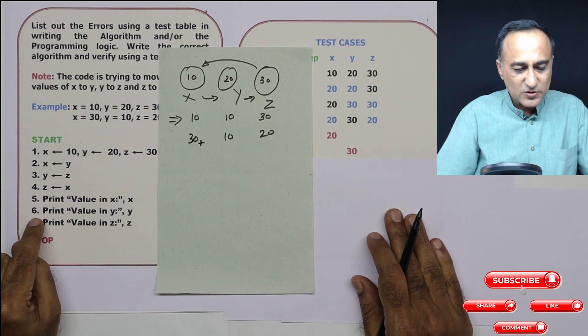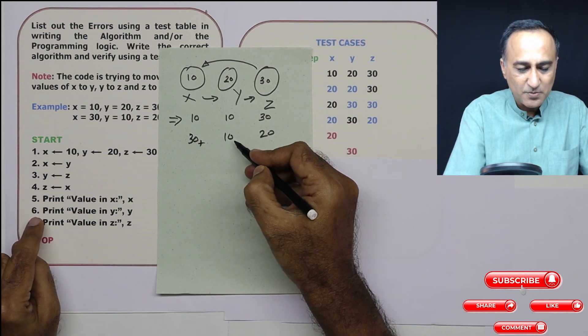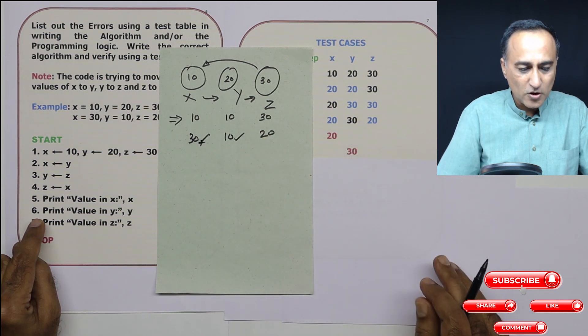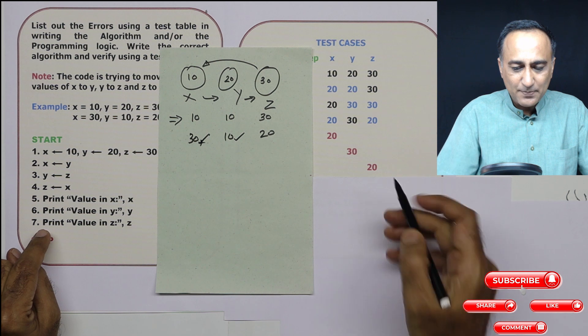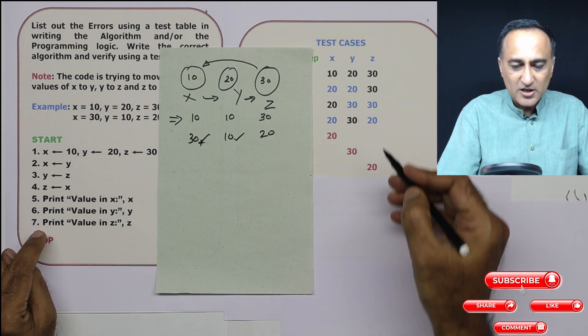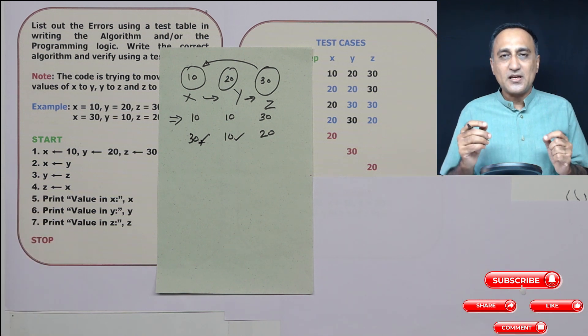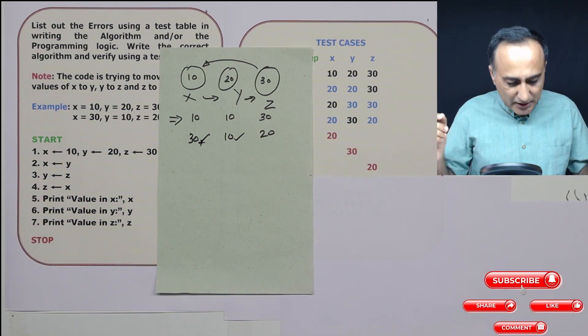Step number six value of y is 30, whereas it should have been 10. So this is correct, this is correct, but this flow is wrong here. Only z happens to be correct by chance. So this is the problem in the logic. There is a problem in the logic here, because the person has failed to use a temporary variable.